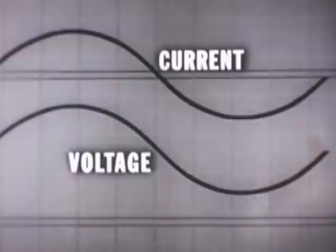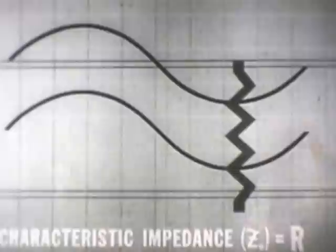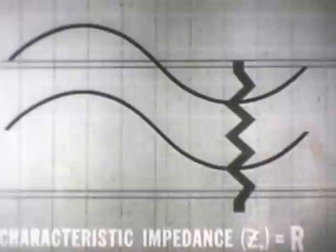Since current and voltage are in phase, our transmission line is acting as a resistance. This resistance is called the characteristic impedance of the transmission line.